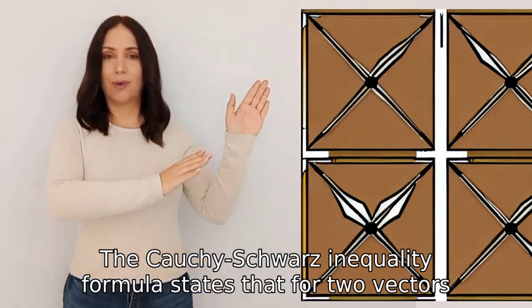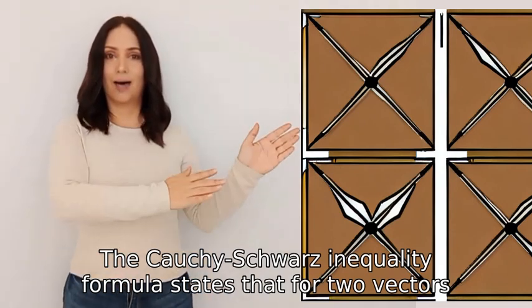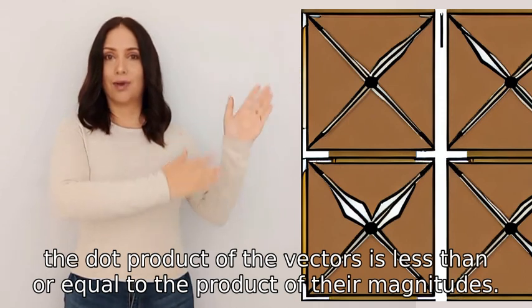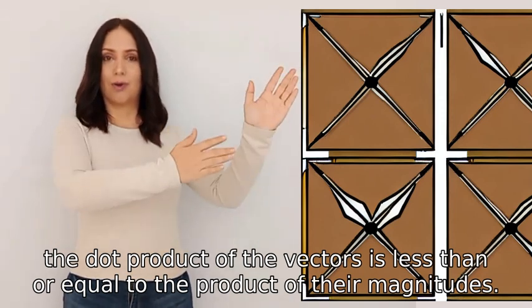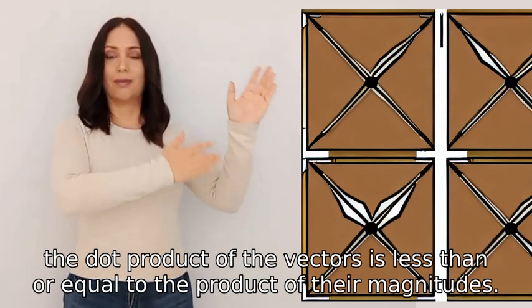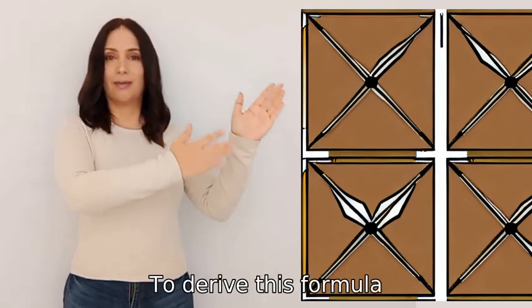The Cauchy-Schwarz inequality formula states that for two vectors a and b, the dot product of the vectors is less than or equal to the product of their magnitudes. Mathematically, it is written as |a · b| ≤ |a| * |b|.